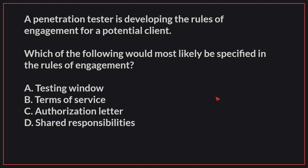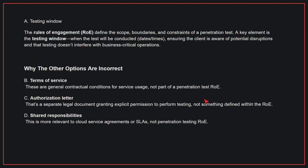A penetration tester is developing the rules of engagement for a potential client. Which of the following would most likely be specified in the rules of engagement? The correct answer is A, testing window. The rules of engagement define the scope, boundaries, and constraints of a penetration test. A key element is the testing window — when the test will be conducted — ensuring the client is aware of potential disruptions and that testing doesn't interfere with business-critical operations.